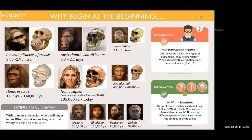We are Homo sapiens — anatomically modern humans. We didn't appear the way we are today until around 200,000 years ago. But our ancestors, the folks that looked and behaved a lot like us, go back for millions of years. We can trace our origins through Homo erectus, who was around for several million years until about 140,000 years ago, and before that, Homo habilis.